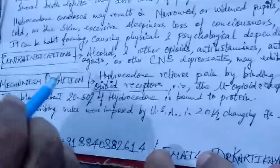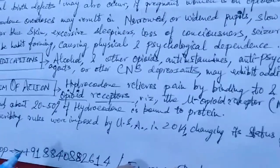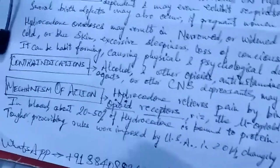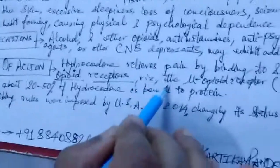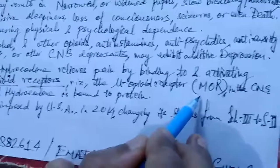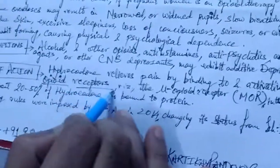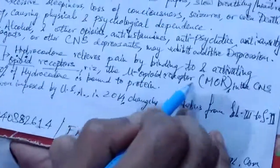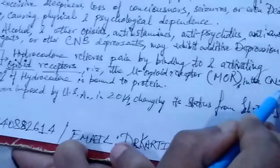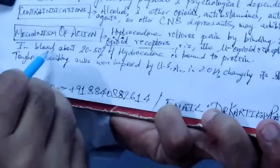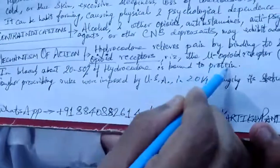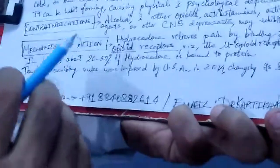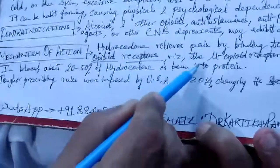Regarding the mechanism of action, hydrocodone relieves pain by binding to and activating opioid receptors — namely the mu opioid receptor (MOR) — in the central nervous system. In blood, about 20 to 50 percent of hydrocodone is bound to protein, which is a significant percentage.